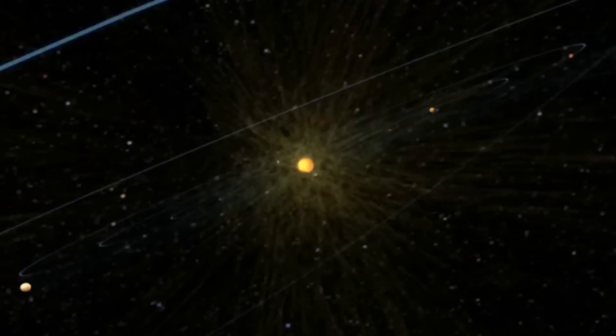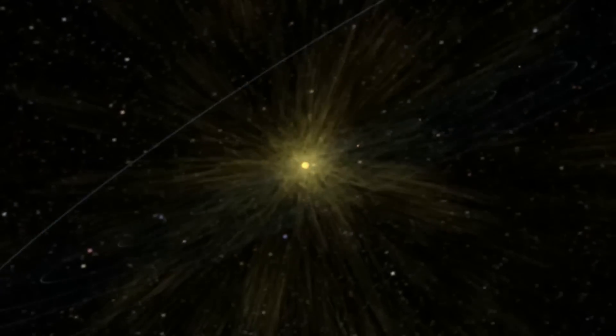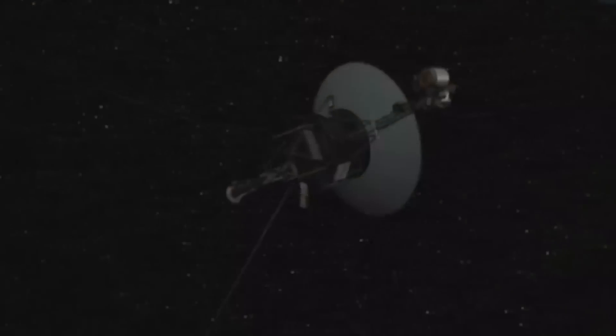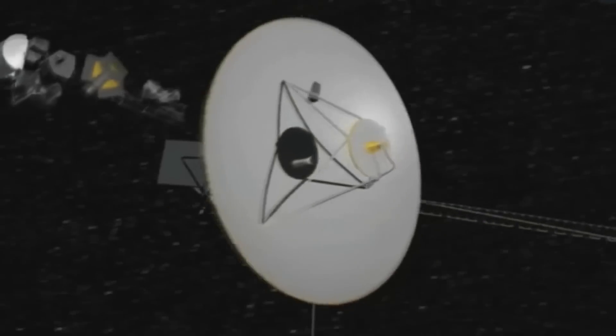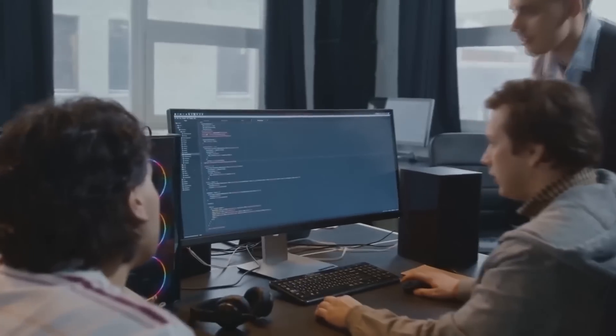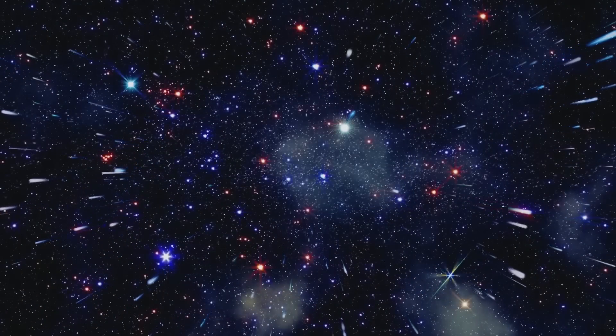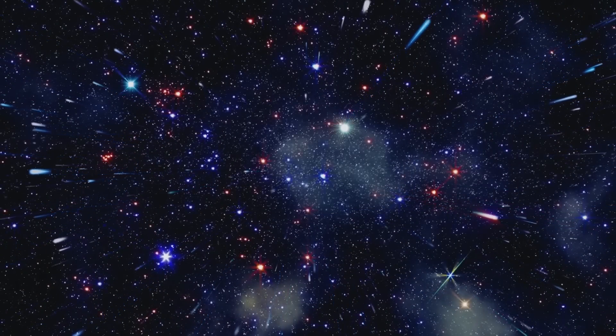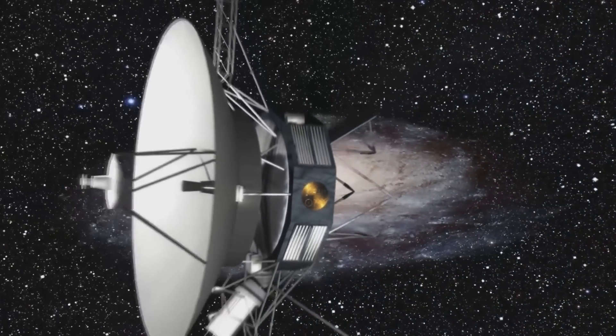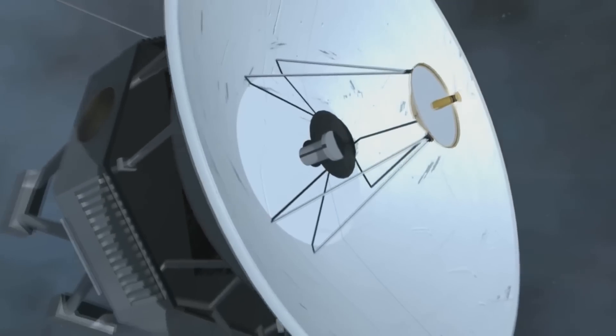The exact distance of the heliopause was a mystery when the Voyager was launched. Although Jupiter is only five times the distance between Earth and the Sun, some thought the heliopause might be close by. However, estimates of this distance increased as the spacecraft traveled farther and farther away.